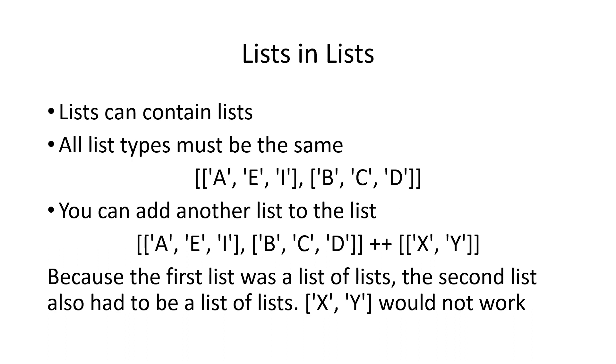Note the following, the end list there, the bracket bracket X comma Y bracket bracket, has to be a list of lists because the first array is a list of lists. If you just use bracket X comma Y bracket, that wouldn't work because that would be a list of characters, not a list of list of characters.